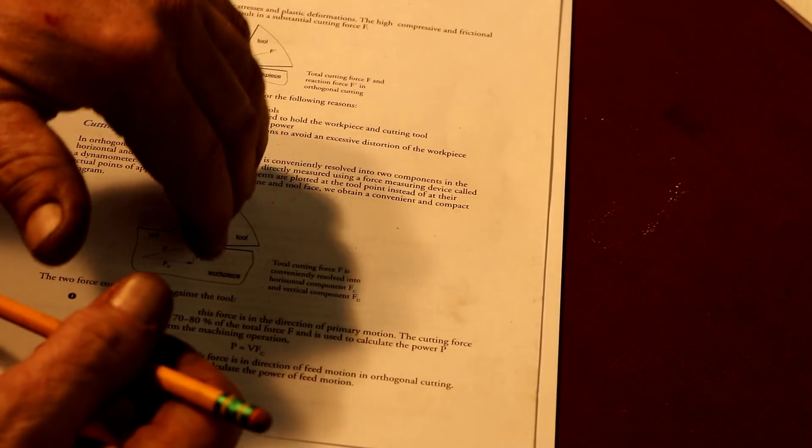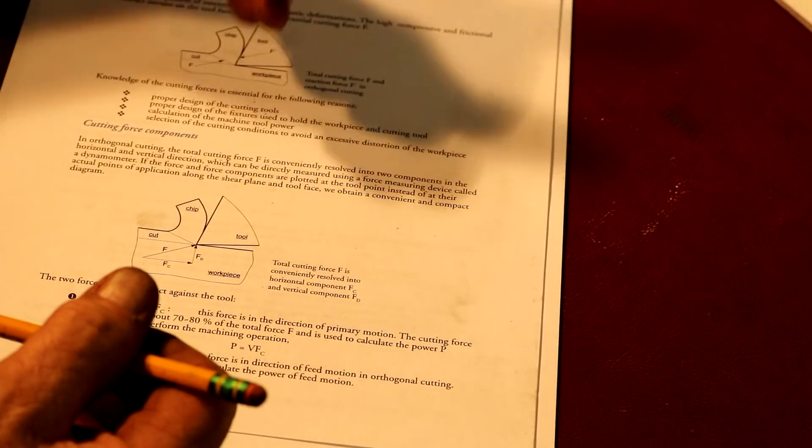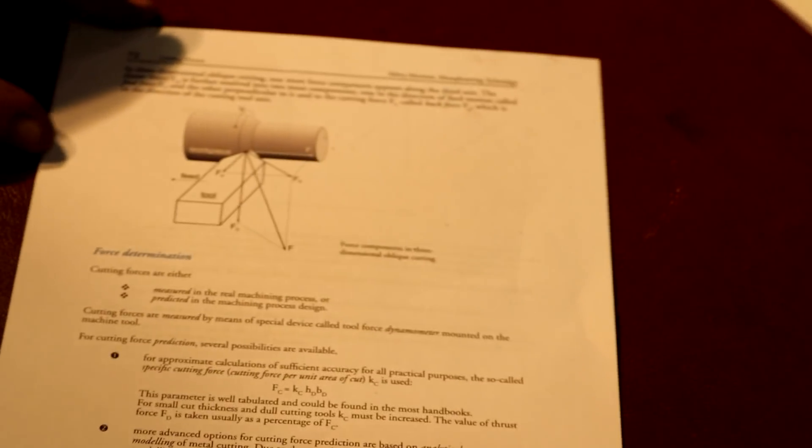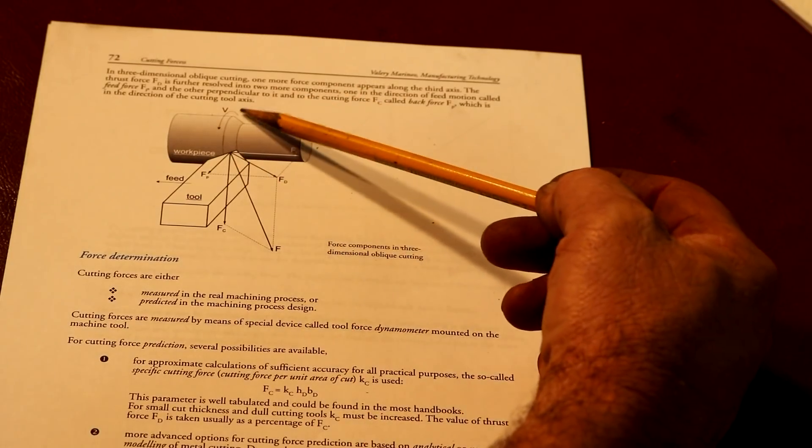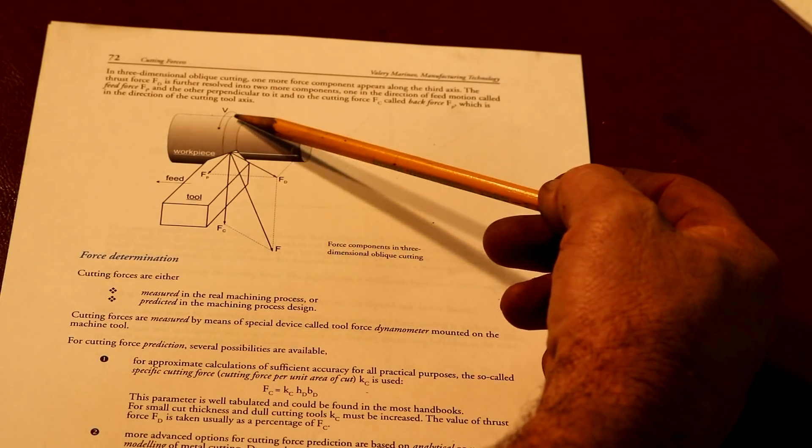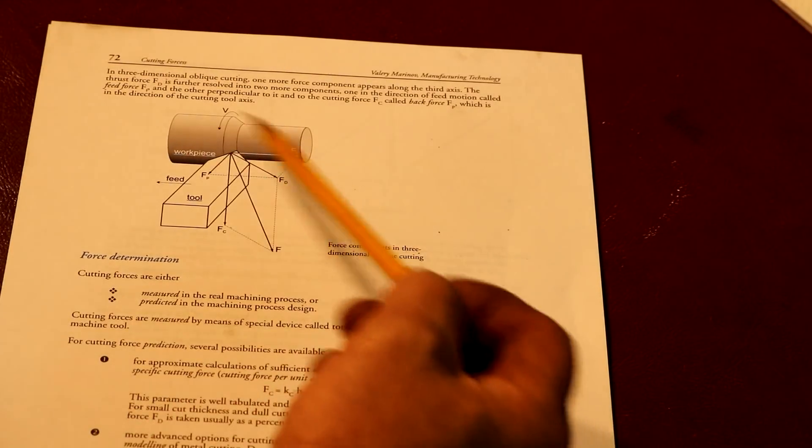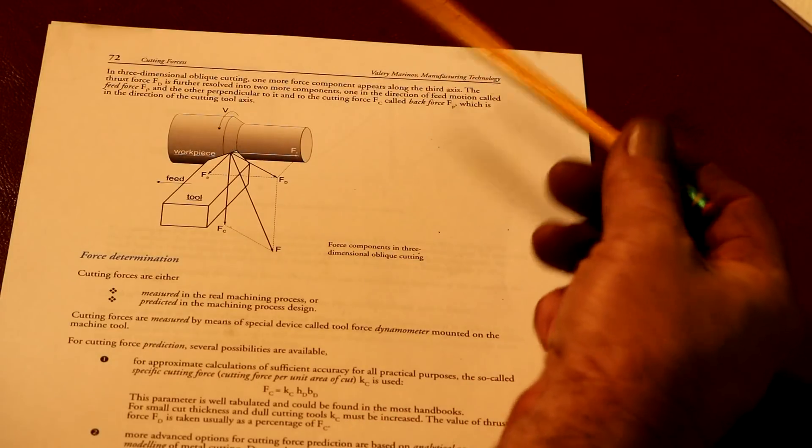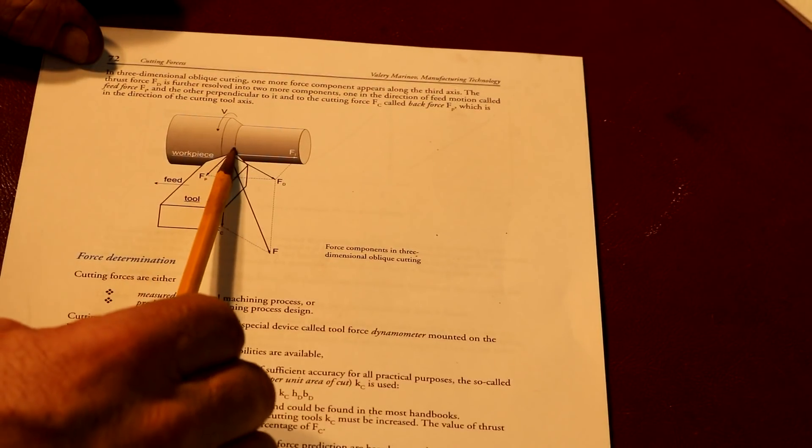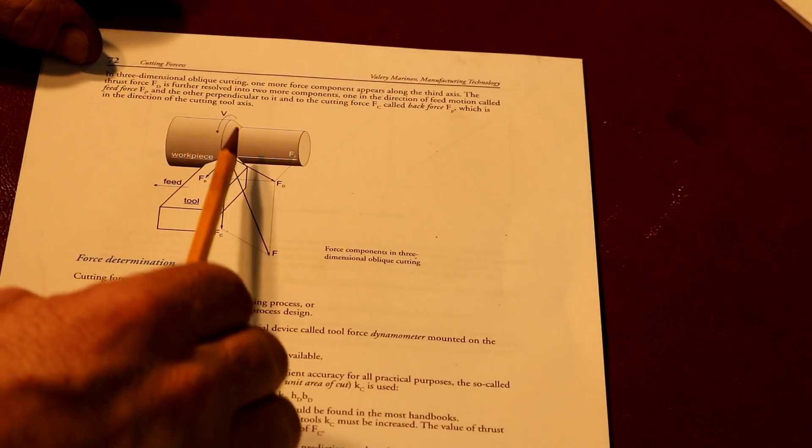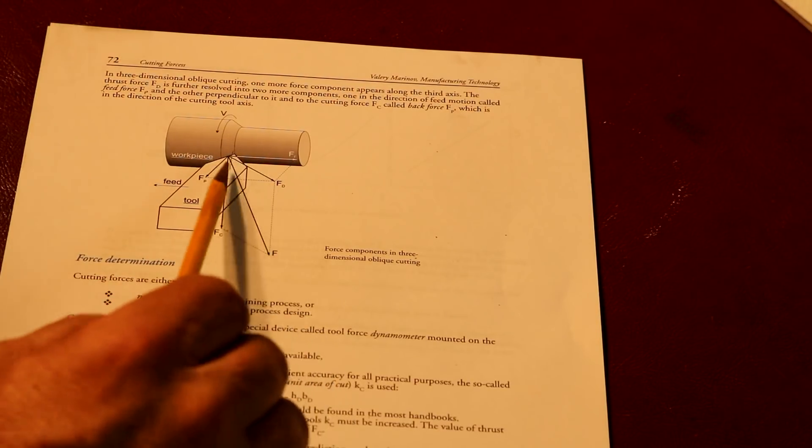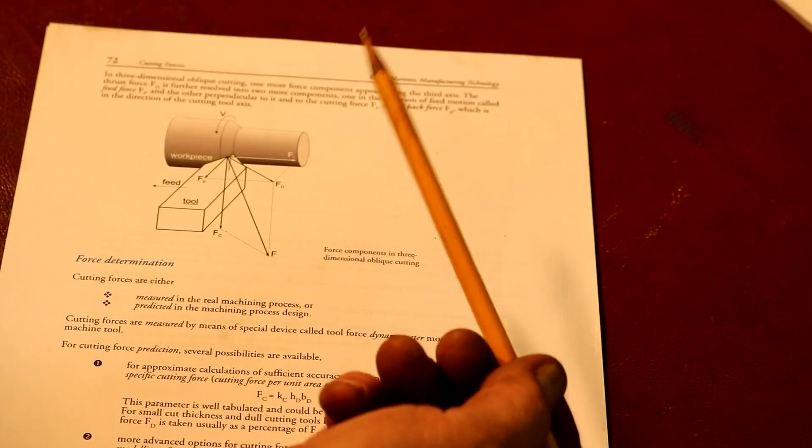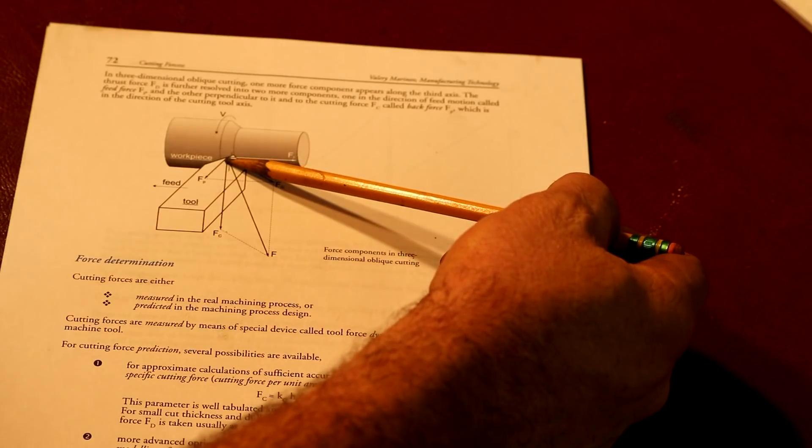You have the one force of the rotation of the work coming down on top of your tool, and you have a feed force, so you have two actions going on there. Here's a nice picture showing, depending on your rotation here that they're showing as V, this diagram shows all three things going on.